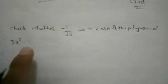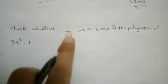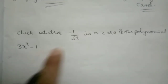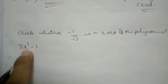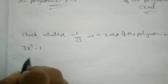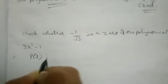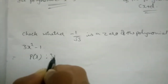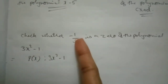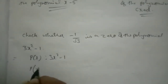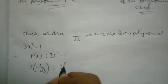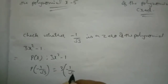Next question: check whether minus 1 by root 3 is a zero of the polynomial 3x squared minus 1. You have to check whether this is a zero of this polynomial. We will take the polynomial: p(x) equals 3x squared minus 1. In the place of x we substitute minus 1 by root 3. So p of (minus 1 by root 3) equals 3 times (minus 1 by root 3) whole squared minus 1.